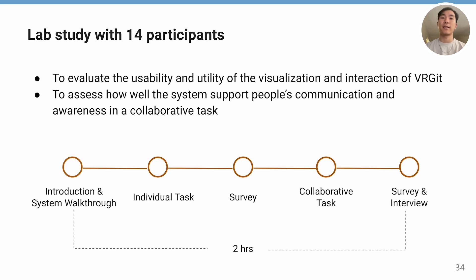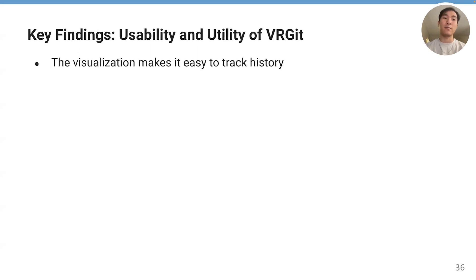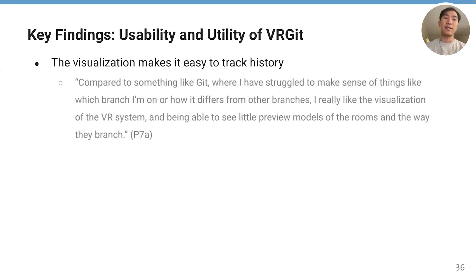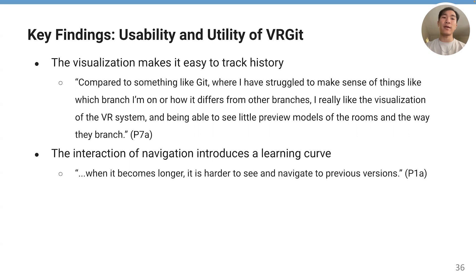During the study, participants were asked to design the floor plan of an apartment both individually and collaboratively. We collected data through surveys and interviews. For the usability and utility of VRGit, we found that the visualization of the system makes it easy to track history. One participant said that, compared to something like Git where I have struggled to make sense of things like which branch I'm on or how it differs from other branches, I really like the visualization of the VR system and being able to see little preview models of the rooms and the way they branch. We also found that navigating a longer history graph could introduce a learning curve — when the history becomes longer, it is harder to see and navigate to previous versions.